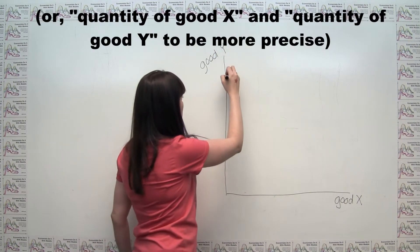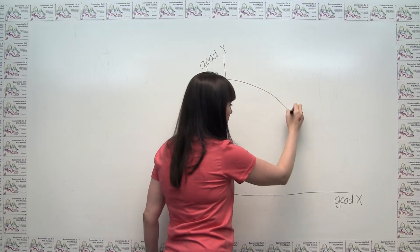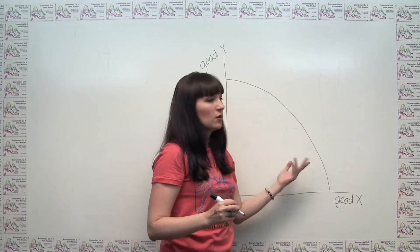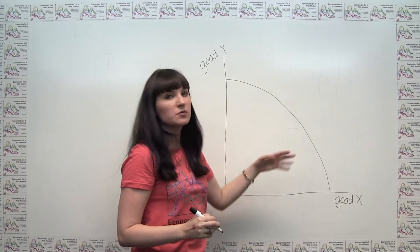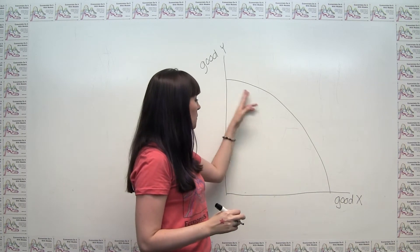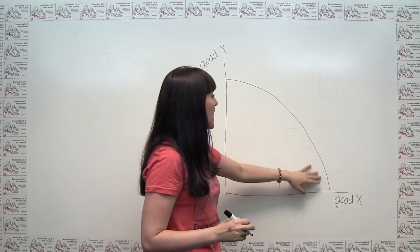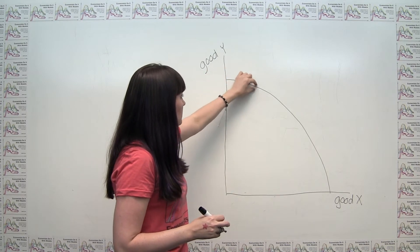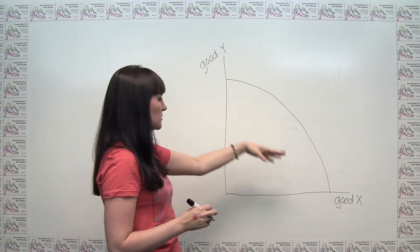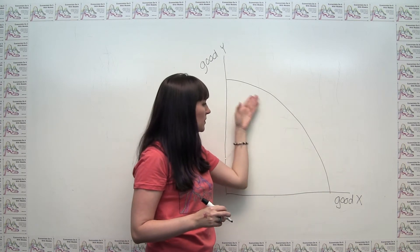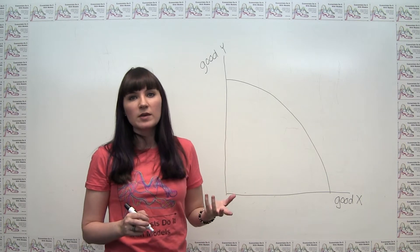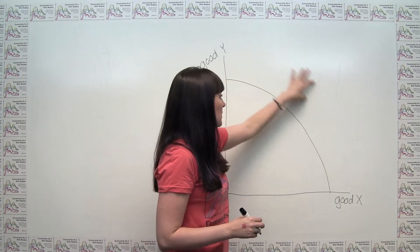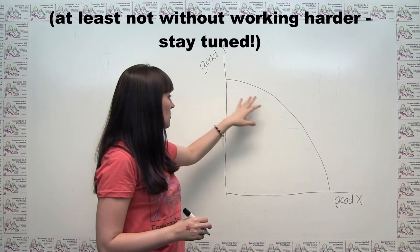And we say in general that the production possibilities frontier, or alternatively the production possibilities curve, generally has a shape that's bowed out in a way similar to this here. And this is just because the production possibilities frontier is really the maximum output that an economy can create. It's showing all the different combinations of good x and good y that this economy can produce if it's using its resources efficiently. So we can't produce anything outside of the production possibilities frontier.